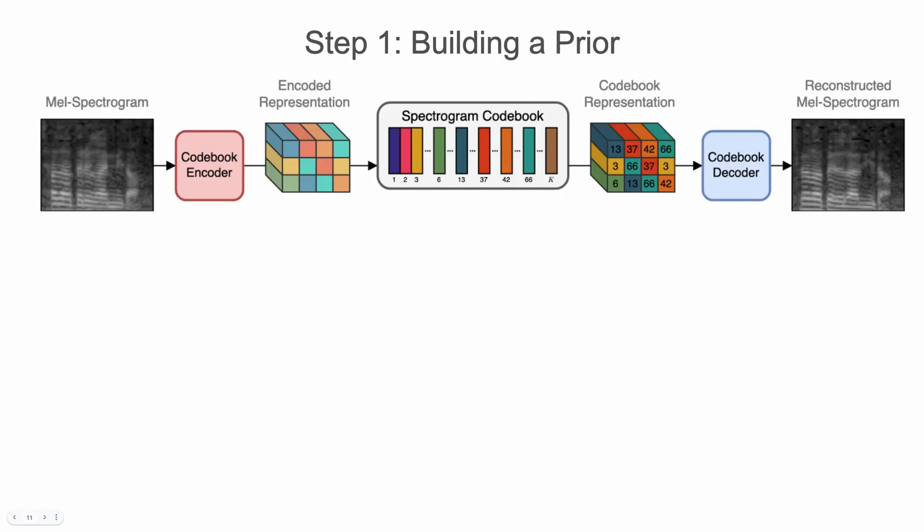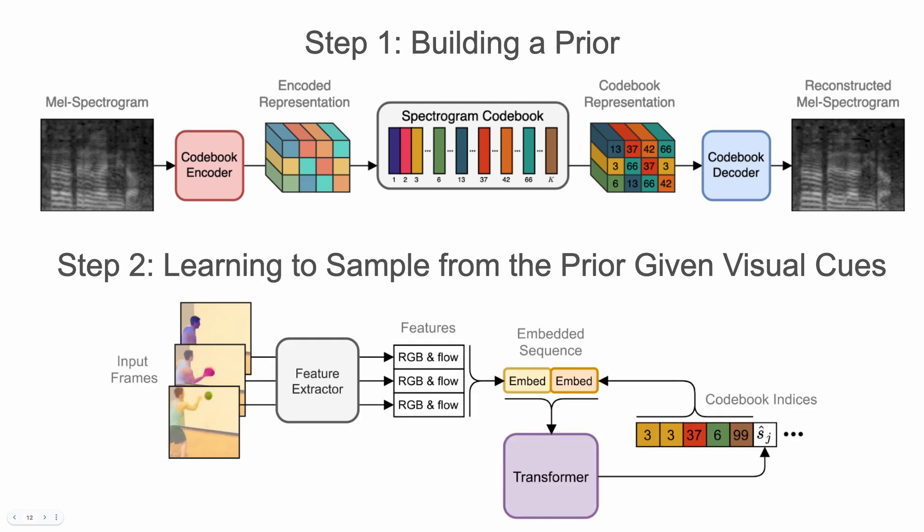As the first step, we suggest shrinking the training dataset into a spectrogram codebook. In the second step, we will train a sequence-to-sequence model to sample indices to the codebook, given a set of video frames. Let's discuss each step in detail.